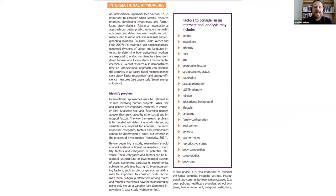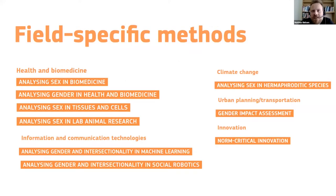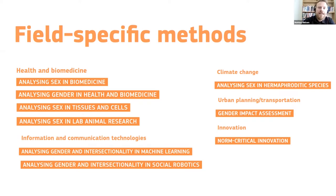More importantly, the Gendered Innovations project includes a number of field- and discipline-specific methods that provide more detailed instruction on how to consider sex, gender, and intersectionality in research. In health and biomedicine these include sex and gender analysis in biomedicine and health research, sex analysis in research on tissues and cells, and sex analysis in lab animal research. In information and communication technologies there are methods covering gender and intersectionality analysis in machine learning and social robotics, as well as specific methods in the domains of climate change, urban planning, and innovation justice.